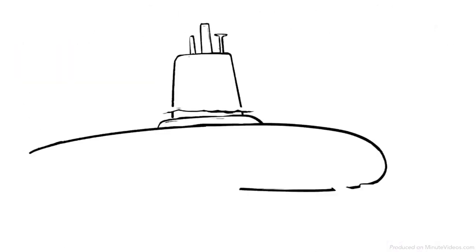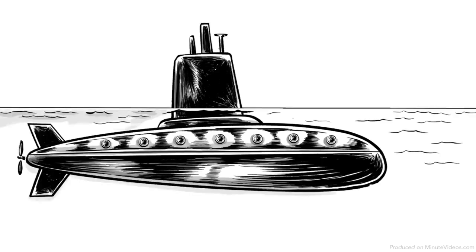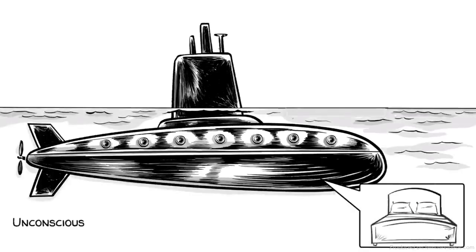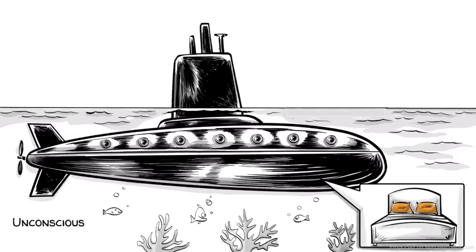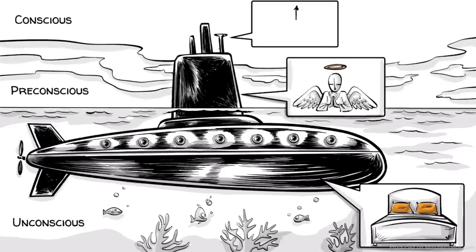Freud claimed that our mind operates in three spheres, which we can imagine as a submarine. The unconscious level operates the id. The pre-conscious level operates the super ego. The conscious and pre-conscious levels operate our ego.